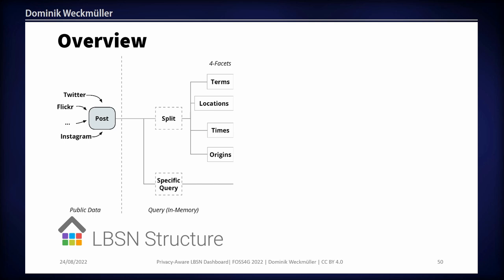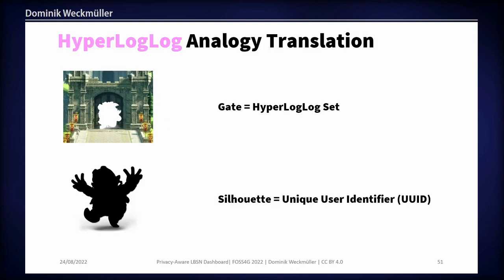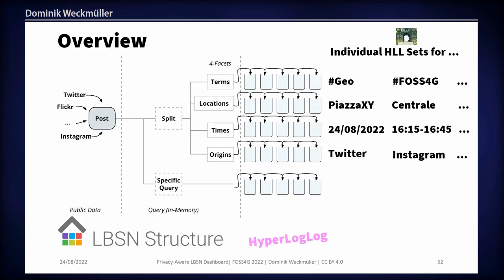Coming back to LBSN structure — think about social media posts split into these tiny atomic facets. Translating this analogy to the real world: the gate is the HyperLogLog set, which retains information about the unique number of people that pass through. The silhouette is the unique user identifier or user ID on social media — it can be an ID, an email address, or a phone number. It just must be unique.